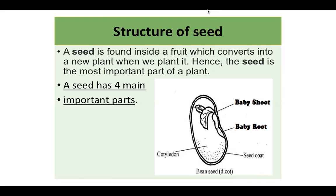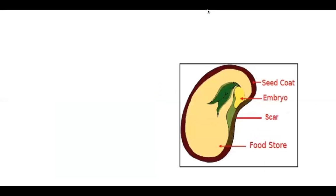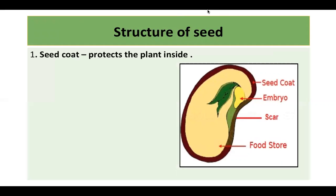A seed has four main important parts. Now I would request you all to take a seed in your hand. If you see, the seed has some color — it would be black, green, or brown. This color of the seed is because of the seed coat. The outer covering of the seed is called the seed coat, and it protects the plant inside.